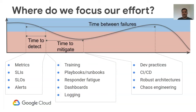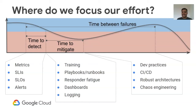Looking at the time to detect: the fundamental improvement is defining and measuring failure — how do we define what a failure is and how do we measure it? The time to mitigate is mostly a people problem — how are we training them, have we given them a good environment to fix the issue, are they overloaded? And ensuring the time between outages is longer fundamentally boils down to engineering discipline.